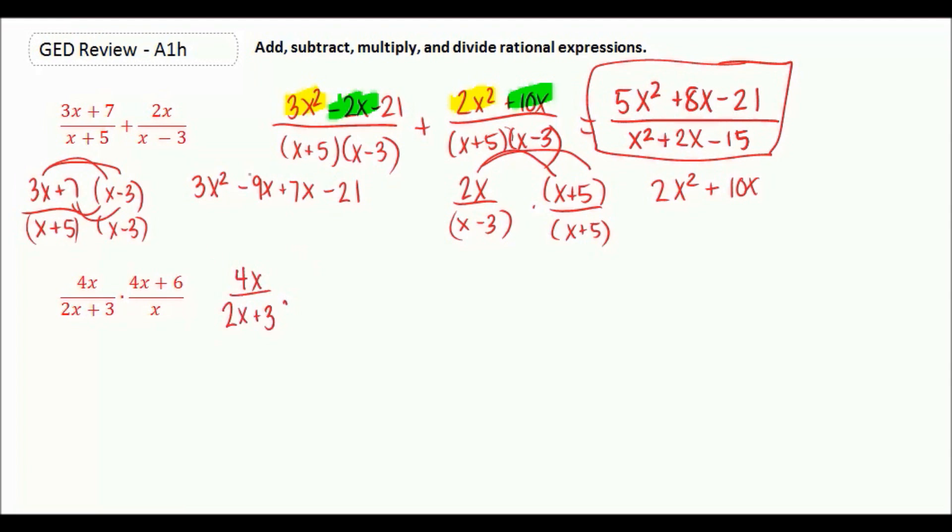However, on the top over here, we can divide out a 2, and that would be 2x plus 3 over x. So our 2x plus 3s will cancel. Our xs will actually also cancel. And all we're left with is 4 times 2, which is 8.